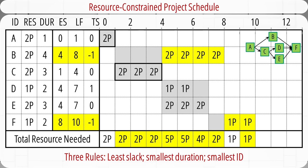We update activity B's early start from 1 to 4, the late finish time from 7 to 8, and the total slack is reduced from 2 to minus 1. In order to keep project network relationships, we also need to delay activity F by one week, because activity F cannot start until activity B is finished. We update activity F's early start, late finish, and total slack numbers as well. After that, we recalculate the total number of programmers for each week and update the bottom row in the table.